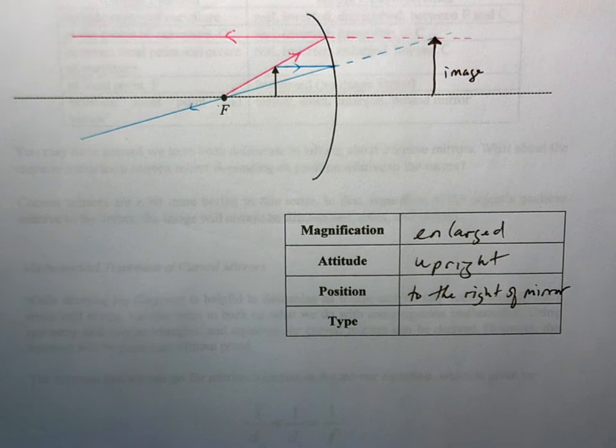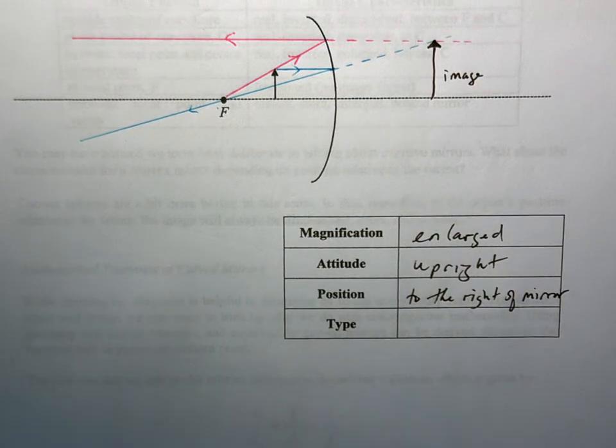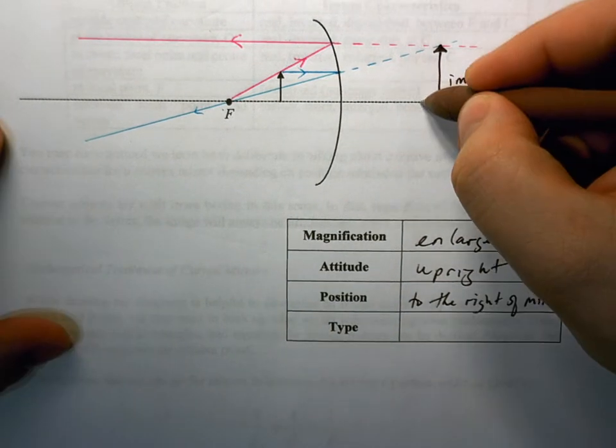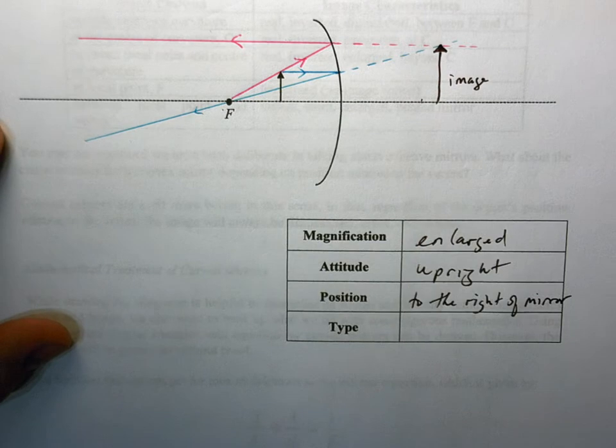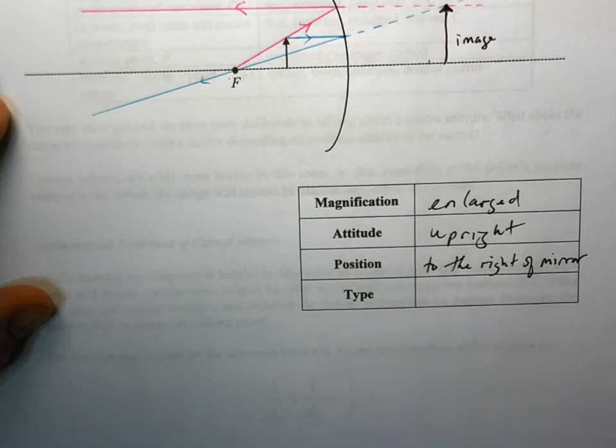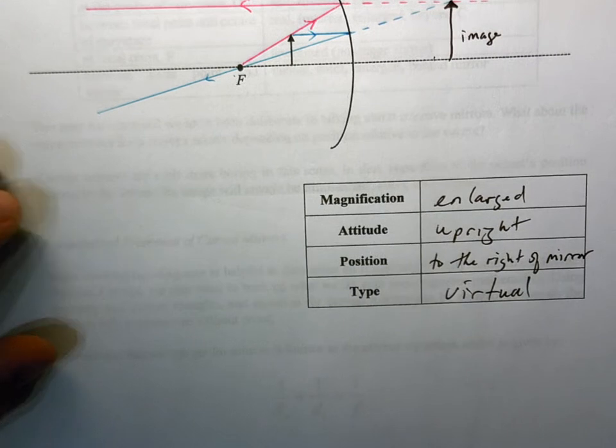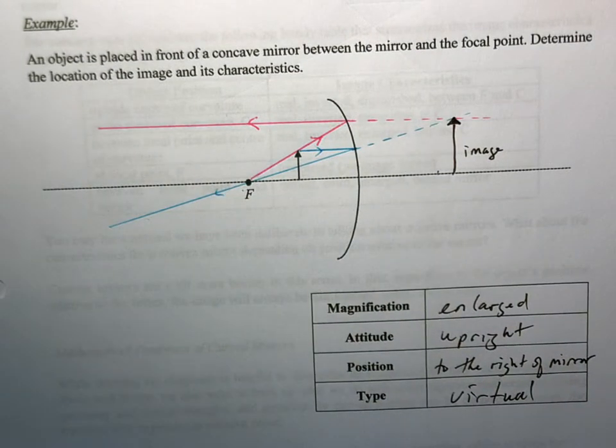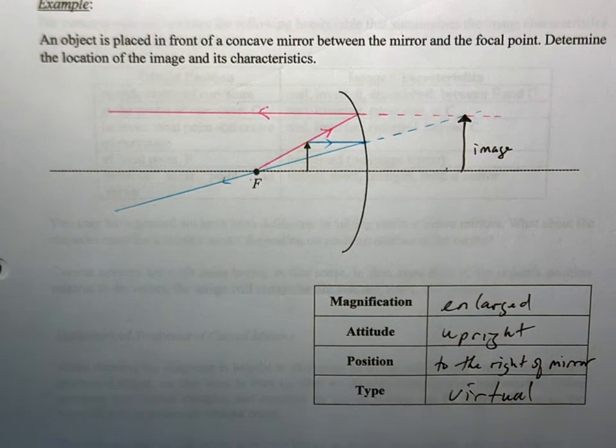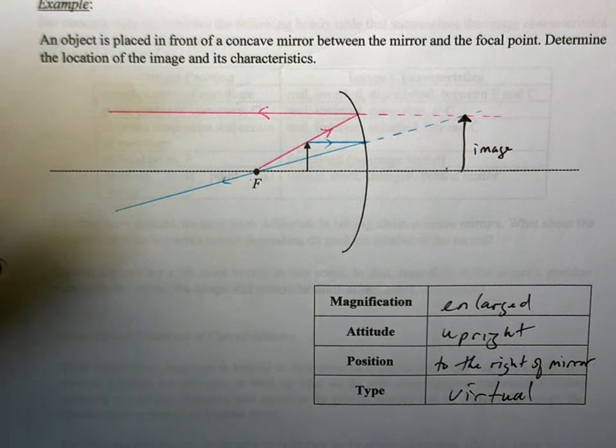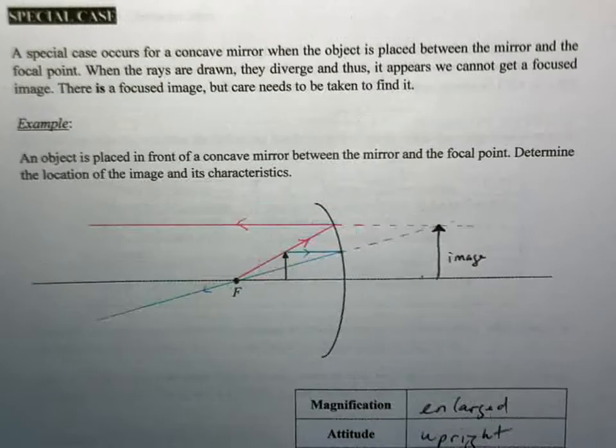And in fact, it should be, if we had this like virtual focal point over here, it should be past this virtual focal point. And then the type, we have a convergence of virtual rays, so this is going to be a virtual image. This one you really want to know. That's the one that seems to get tested quite a bit. It's really sneaky and it's really challenging. This is why they love asking about it.